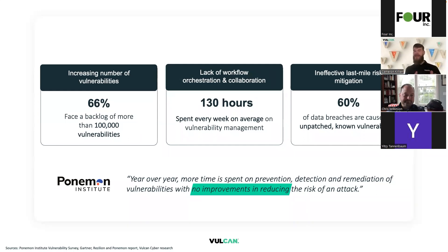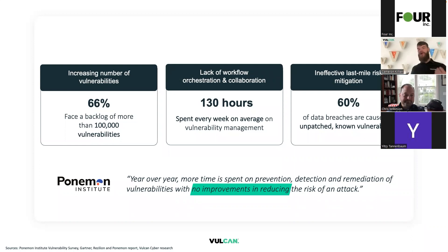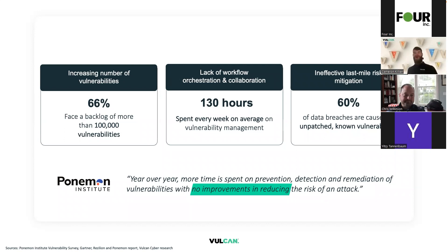The information's there — it's just a matter of not being prioritized. These vulnerabilities, even if low risk, are potentially exploitable and nonetheless important to address. The Ponemon Institute sums this up: year over year, more time is spent on prevention, detection, and remediation of vulnerabilities with no improvement in reducing the risk of attack. So why is this? If we look over the past 10 to 15 years, in the 2010s we had legacy scanners like Qualys, Rapid7, and Tenable that gave us centralized network risk visibility, and you pretty much only needed one.